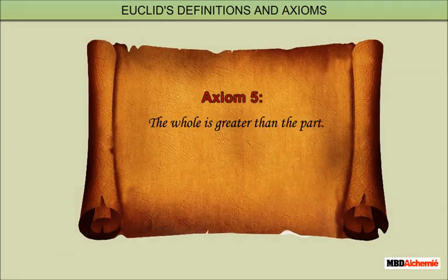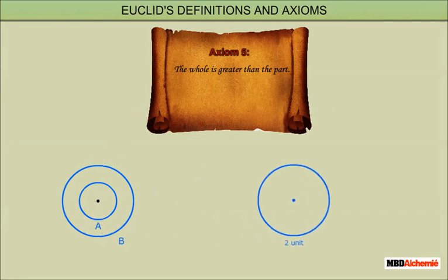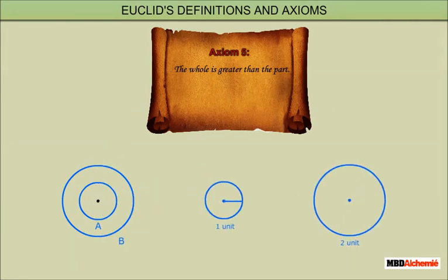Axiom 5: The whole is greater than the part. Circle A is a part of circle B. This means that the area of circle B is greater than the area of circle A.